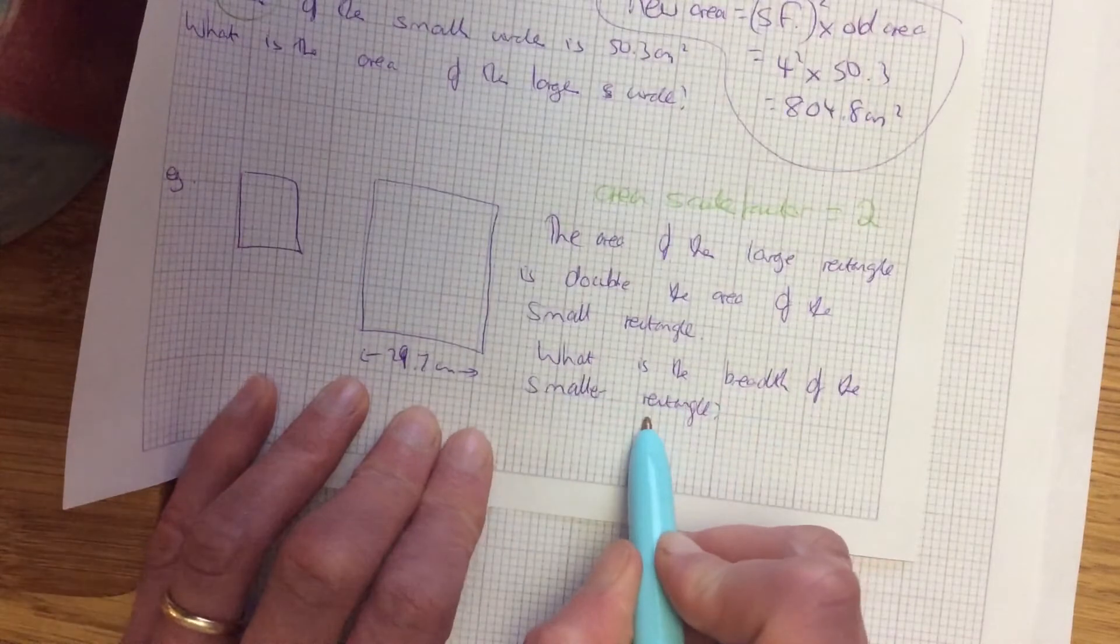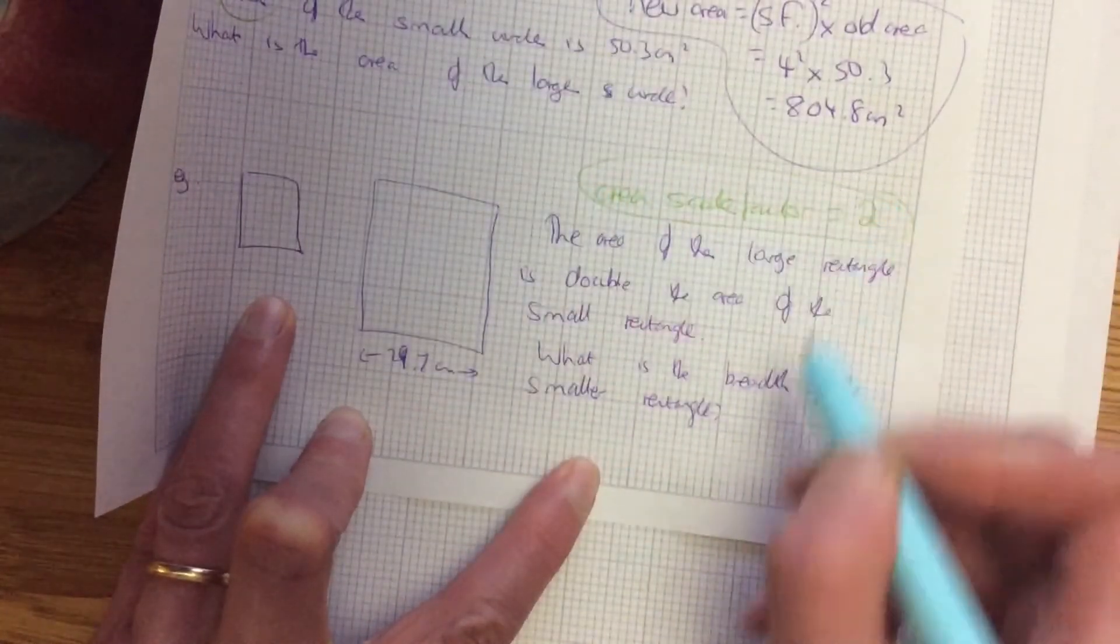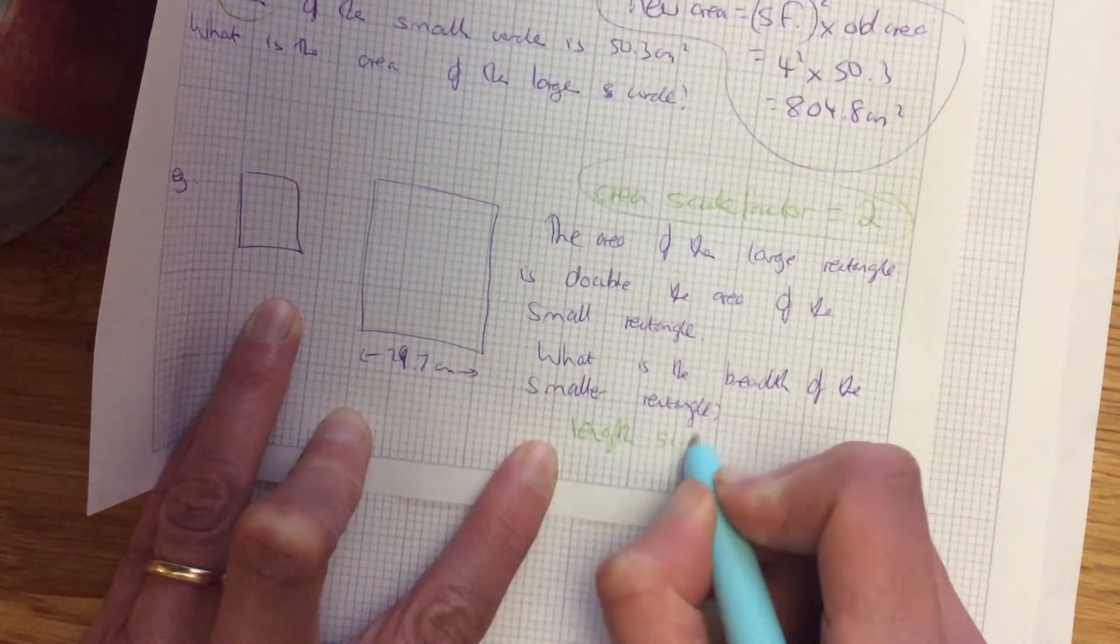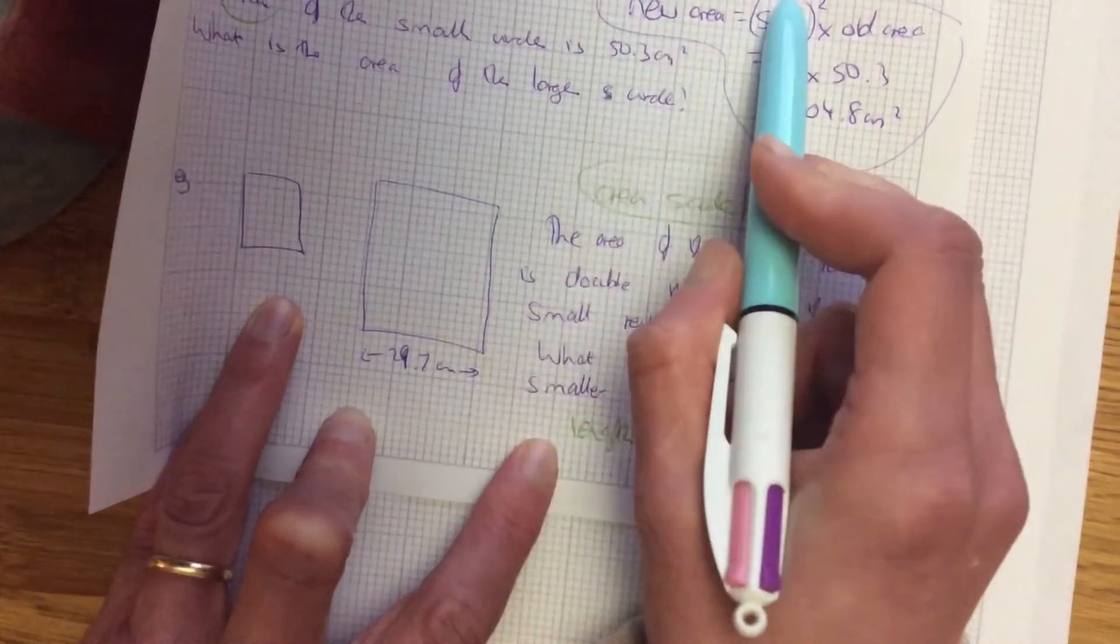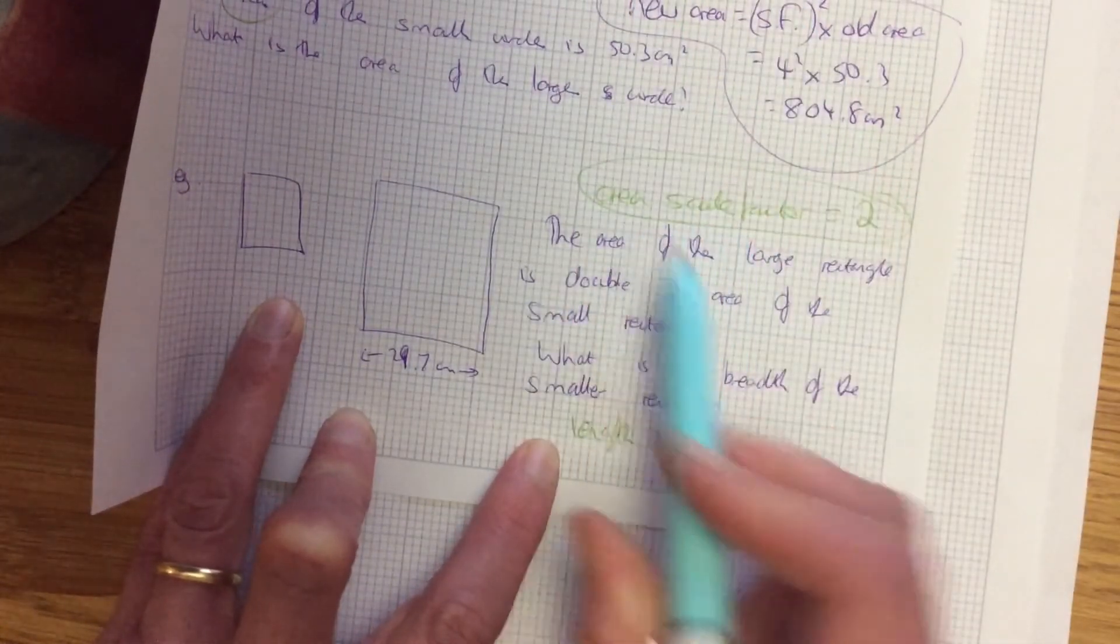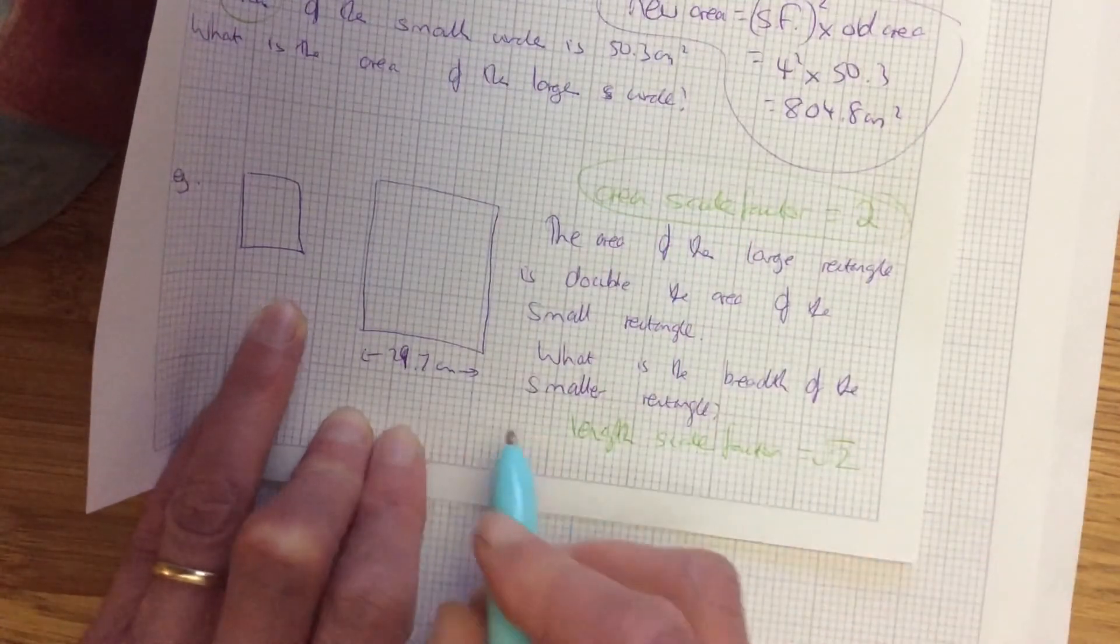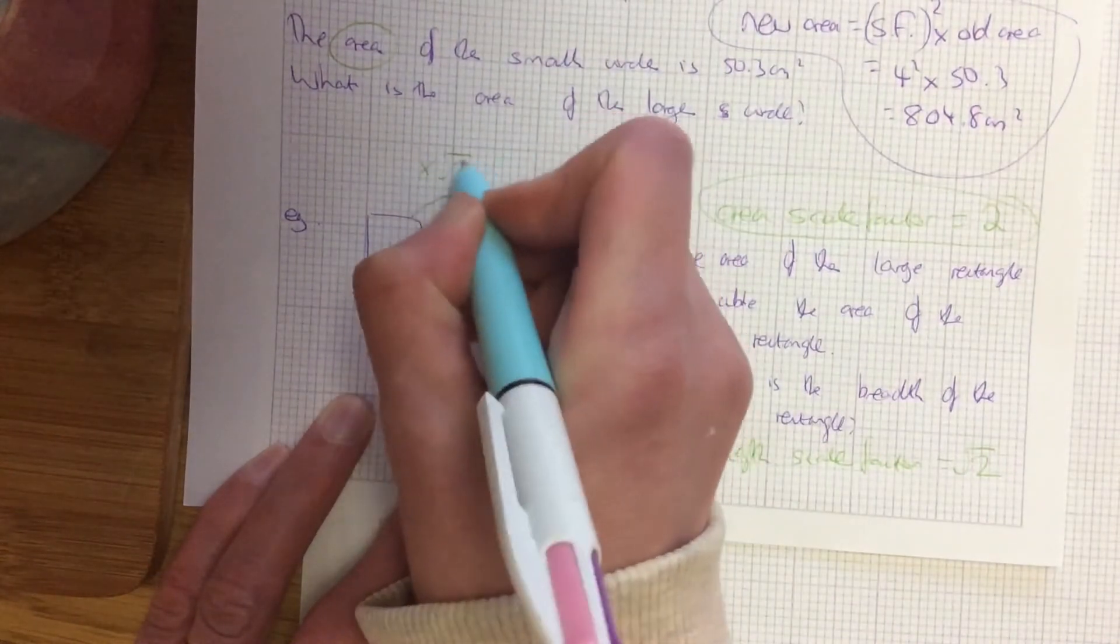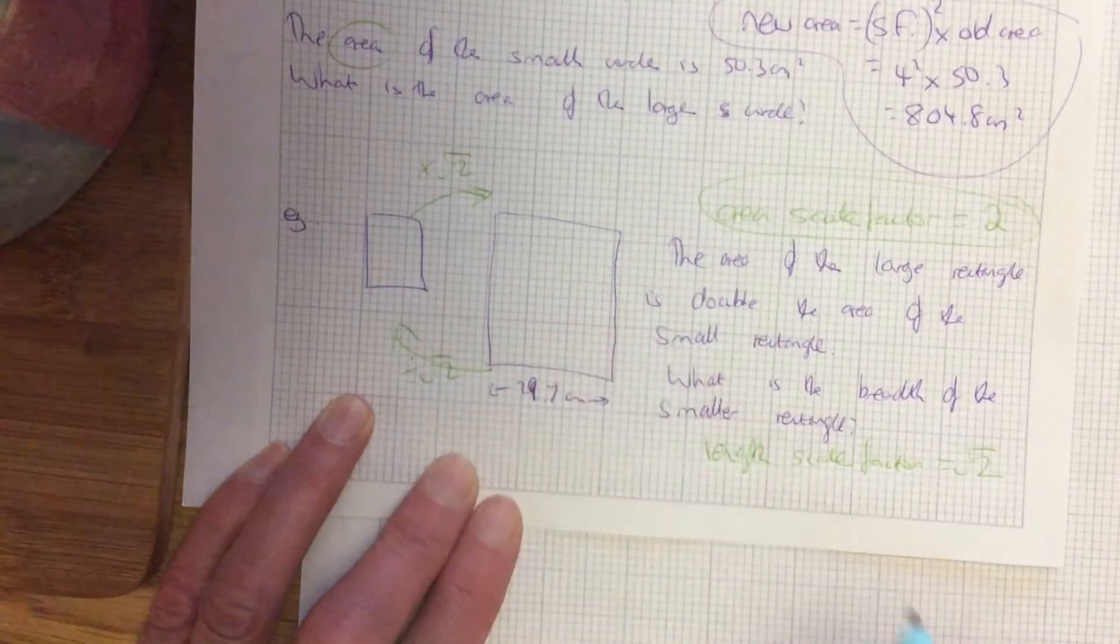It then wants me to work out the breadth of the smaller one. So I know the area scale factor. So the length scale factor. Let's think about this. You know why the area is the scale factor squared? So if I went back just to find the ordinary length scale factor, I'm going to square root it. So basically as I go up, I will times by root 2 and as I go back, I divide by root 2.